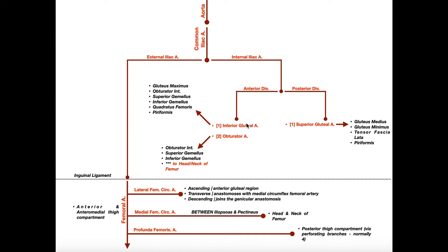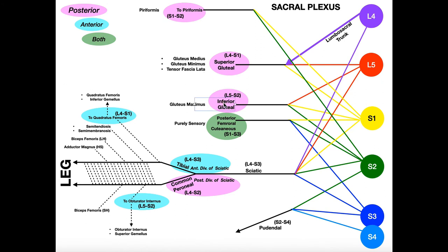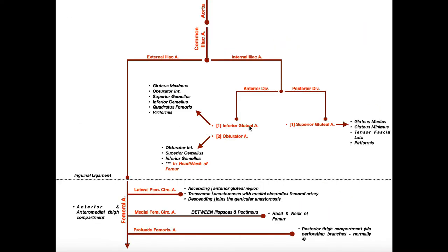Let's first look at the inferior gluteal artery. Hopefully from the sacral plexus you learned that the inferior gluteal nerve supplies the gluteus maximus, so it should be no surprise that the inferior gluteal artery also supplies the gluteus maximus — you can see it there on top. But it actually does a lot more than that. It's also going to have minor muscular branches supplying the obturator internus, superior and inferior gemelli, the quadratus femoris, and the piriformis muscle. If you had to associate one muscle with it, though, I would definitely say gluteus maximus.